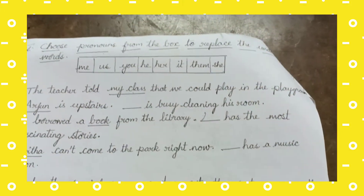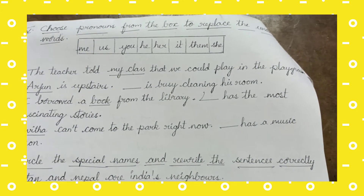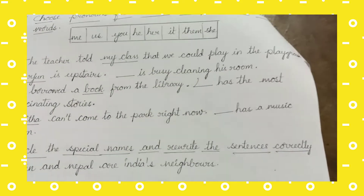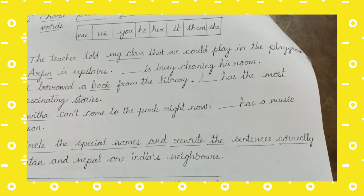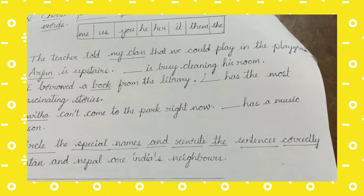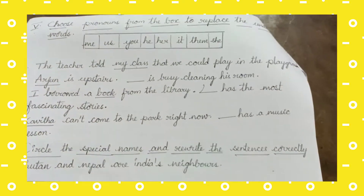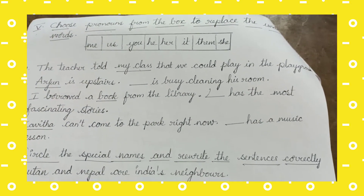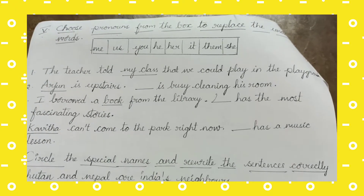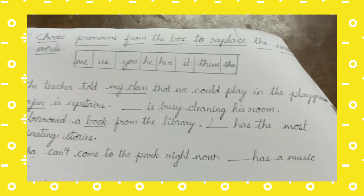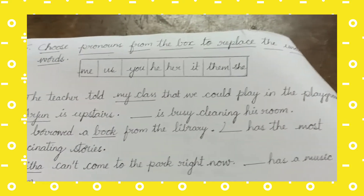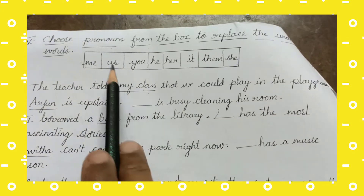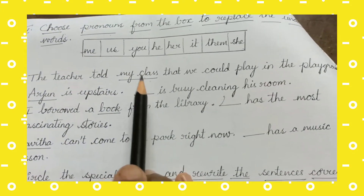For example: Raju is dancing. Raju is listening to music. Raju is eating. Raju is playing in the park. Here Raju is the noun. Raju is a male gender, so which pronoun do we use? We have to use 'he' because it is a male gender. Like that, you have to change the underlined noun and write the pronoun.